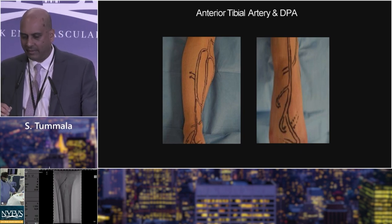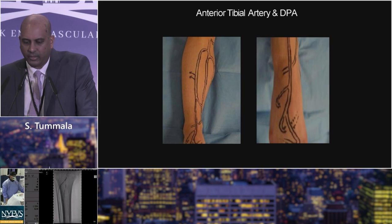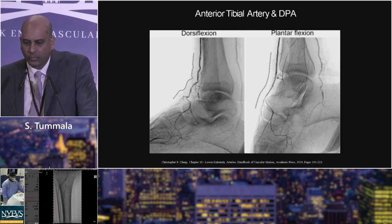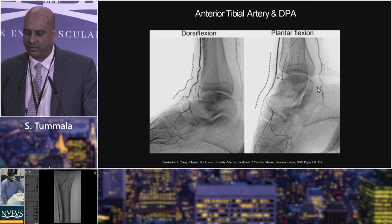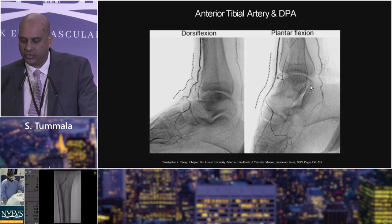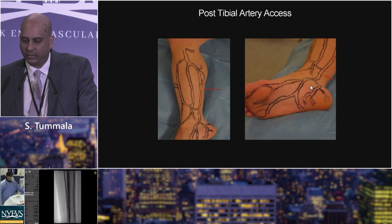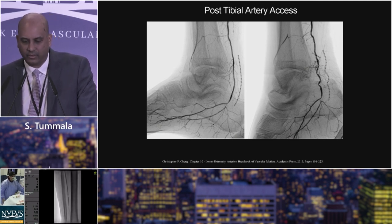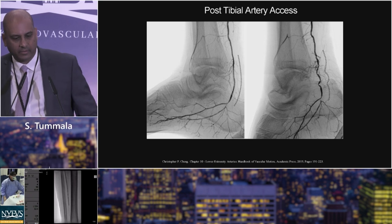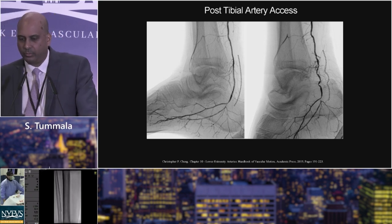For positioning: if accessing the anterior tibial or dorsalis pedis artery, position the leg accordingly. Note that dorsiflexion of the foot creates kinking or angulation in the distal anterior tibial and proximal dorsalis pedis, which resolves with plantar flexion. For the posterior tibial artery, the positioning is the opposite — dorsiflexion straightens out the distal posterior tibial artery, making access easier, while plantar flexion creates kinking.